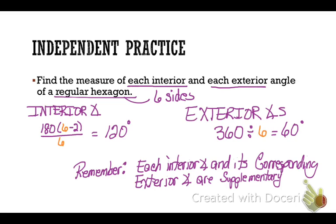And I want you to remember that each interior angle and its corresponding exterior angle are supplementary because they form a linear pair. So to check my work, I can say 120 plus 60 should equal 180, and indeed it does.